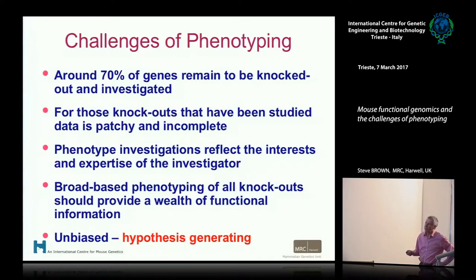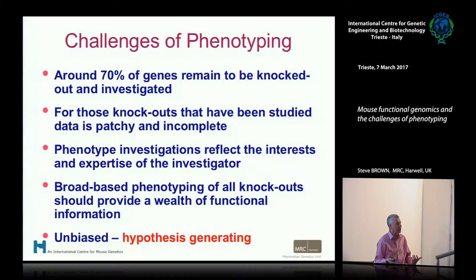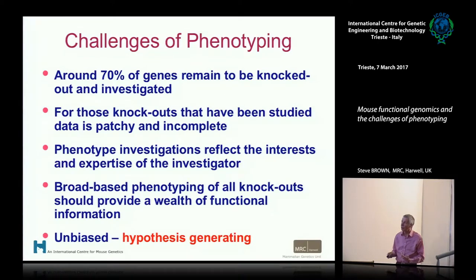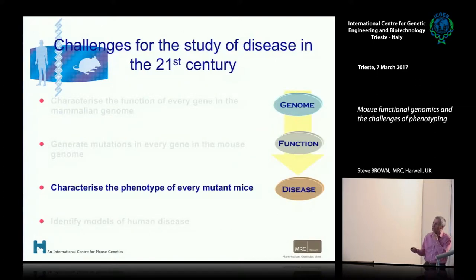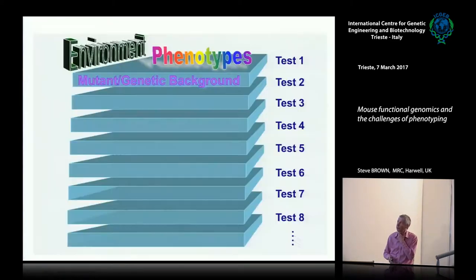If we take knockouts and broadly base phenotype, this is an unbiased approach — it makes no assumptions about what we think a gene might be doing. We all think we know what some genes are doing, but generally we're wrong. We really need unbiased approaches, which will be hypothesis-generating. So how do we characterize the phenotype of any mutant mice that we make? What are the problems and challenges? That's really the first part of my talk.